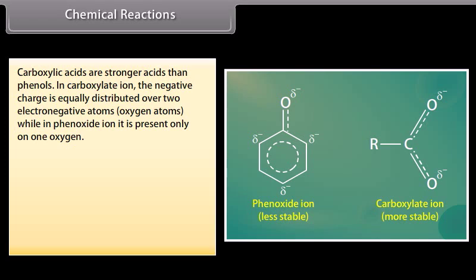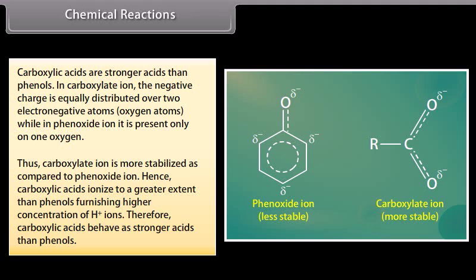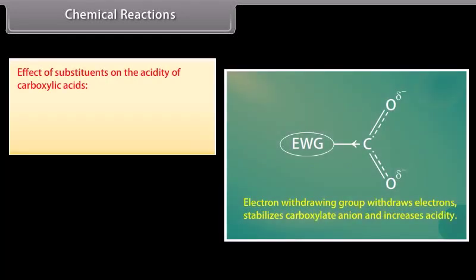Carboxylic acids are stronger acids than phenols. In the carboxylate ion, the negative charge is equally distributed over two electronegative oxygen atoms, while in the phenoxide ion it is present only on one oxygen. Thus, the carboxylate ion is more stabilized compared to the phenoxide ion. Hence, carboxylic acids ionize to a greater extent than phenols, furnishing a higher concentration of hydrogen ions. Therefore, carboxylic acids behave as stronger acids than phenols.